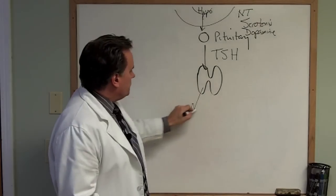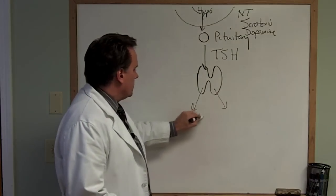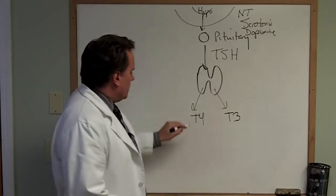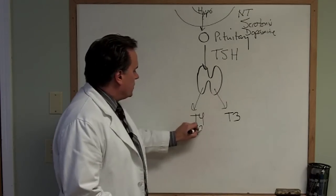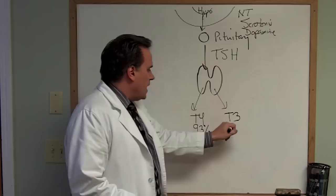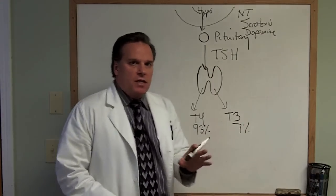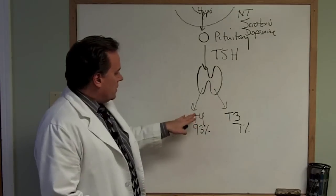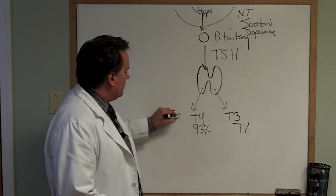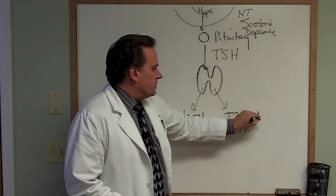The thyroid itself produces two hormones: T4 and T3 — you may have seen those on your blood work. T4 is produced in an amount of about 93% of the total, and T3 is about 7% of the total. Here's the kicker: the T4 hormone is an inactive form. It is the T3 that is active.